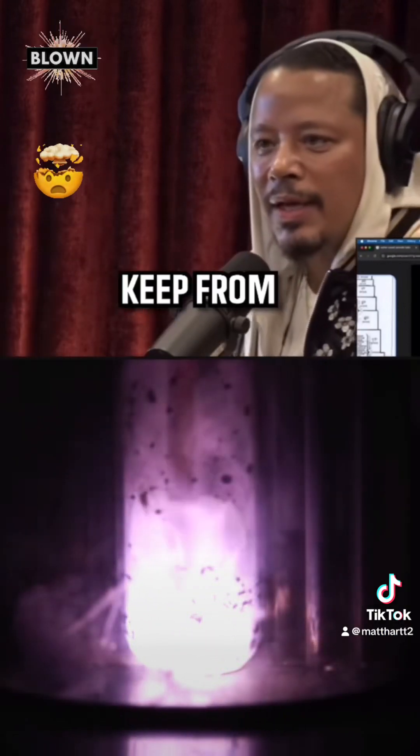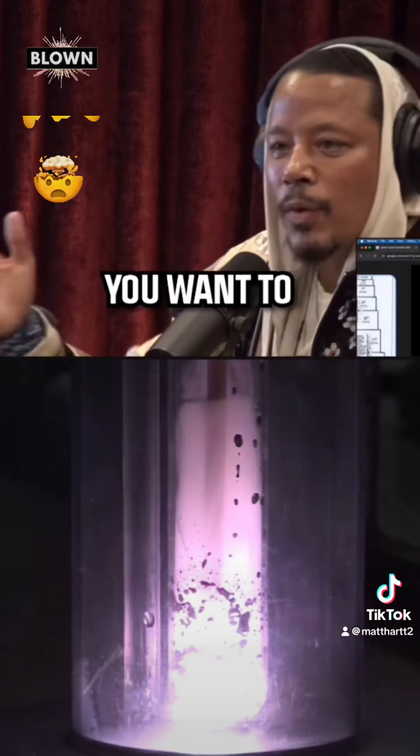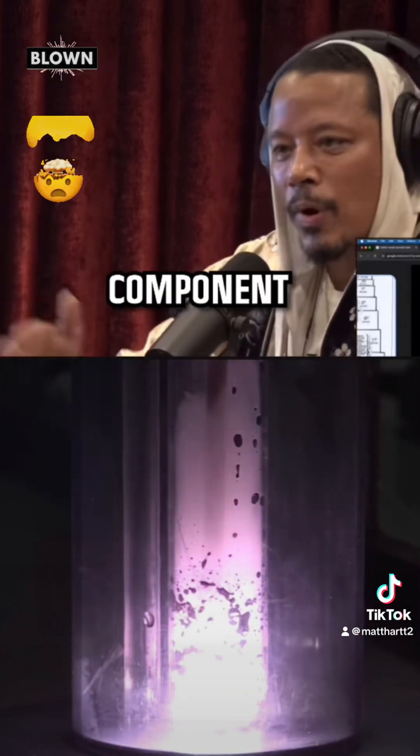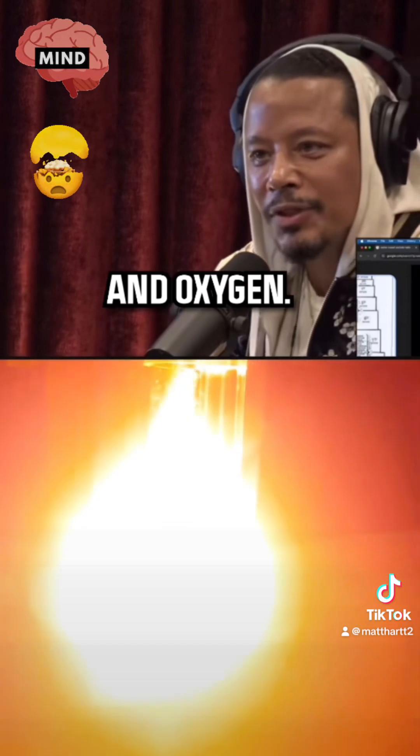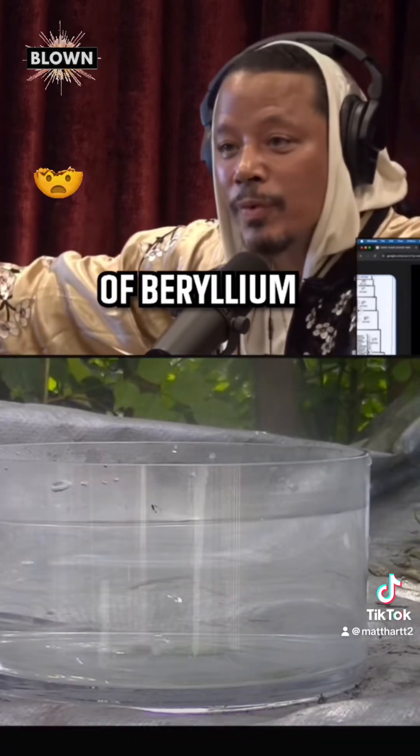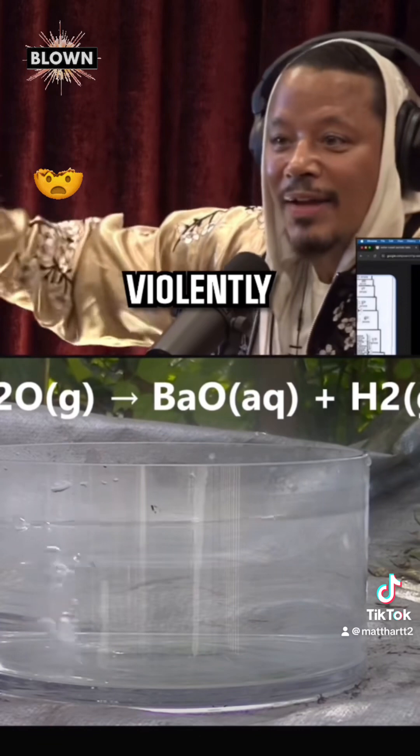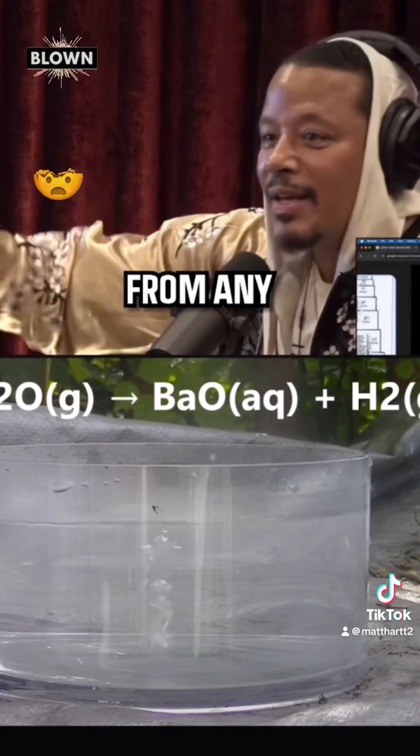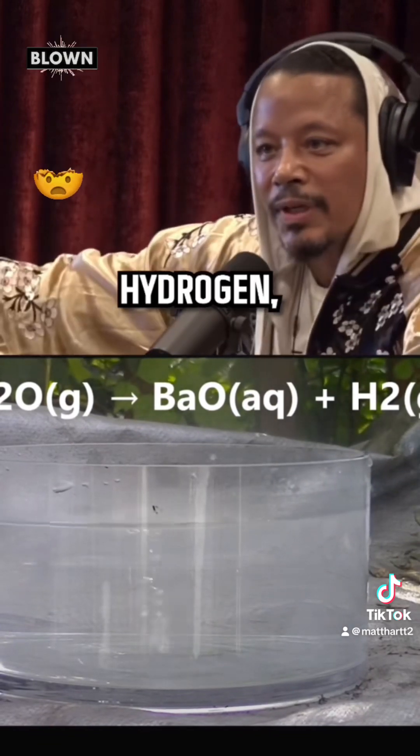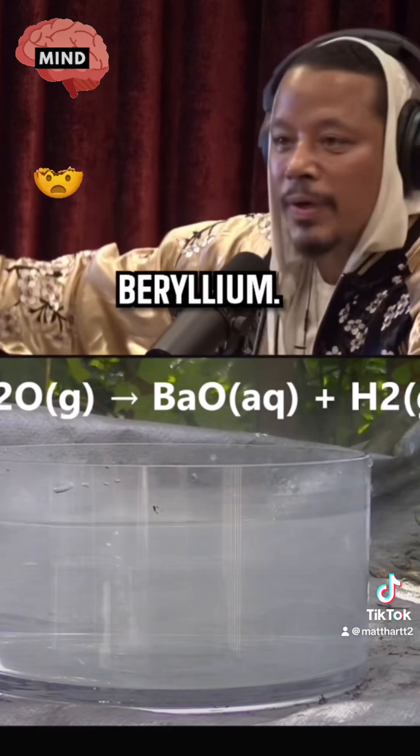And what they've tried to keep from us. If you want to break water into its component parts of hydrogen and oxygen, all you have to do is introduce beryllium or the sound of beryllium. And oxygen will violently break away from any other thing, even hydrogen, to bond with that beryllium.